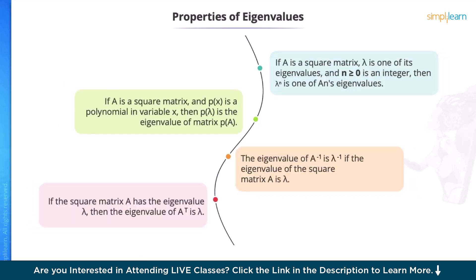If A is a square matrix and P(X) is a polynomial in variable X, then P(λ) is the eigenvalue of the matrix P(A). The eigenvalue of the inverse of A is the inverse of λ. If the eigenvalue of the square matrix A is λ, then the eigenvalue of the transpose of A is also λ.